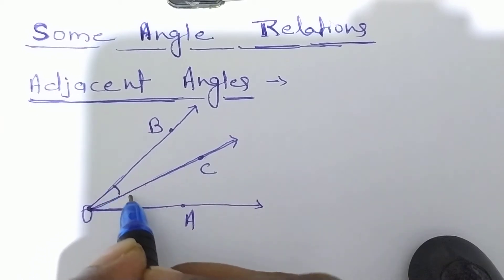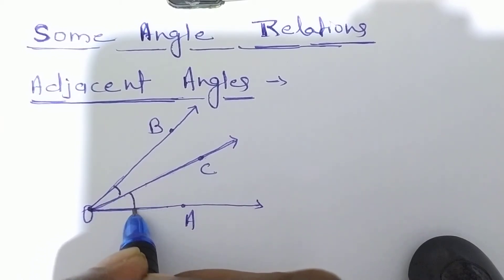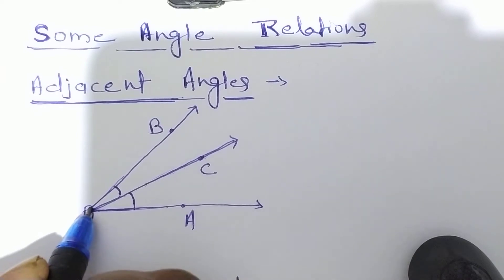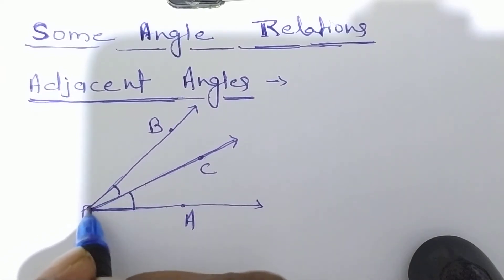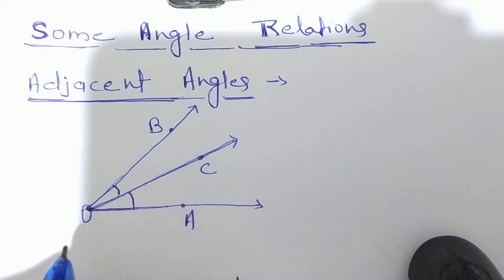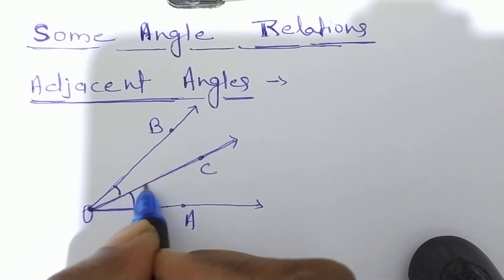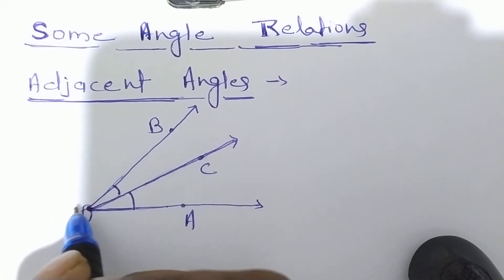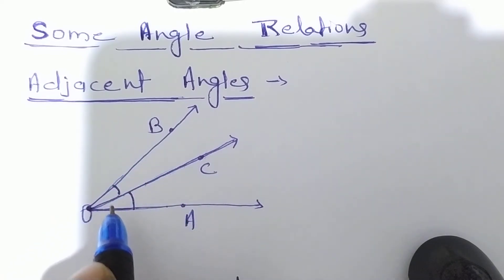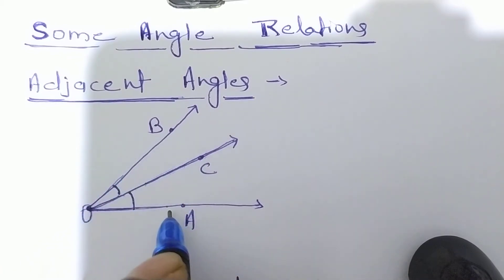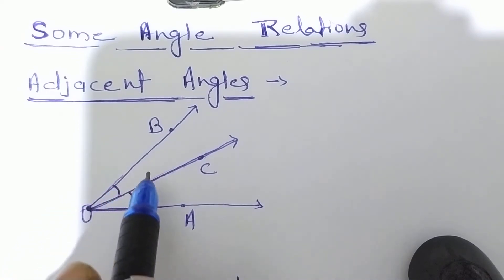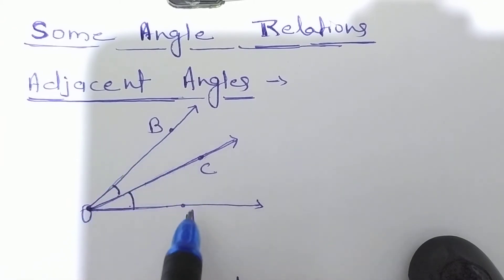Two angles are called adjacent angles if they have the same vertex — here, both angles have vertex O. Second point: they have a common arm, which is OC. And third point: the uncommon arms are on either side of the common arm — that is, OB and OA, the uncommon arms, lie on both sides of the common arm OC. So these three criteria must be satisfied for two adjacent angles.